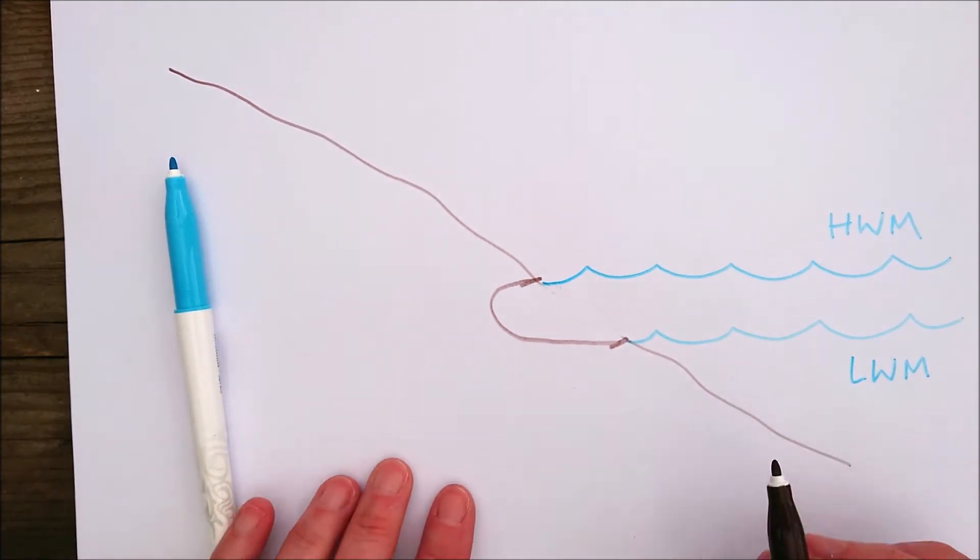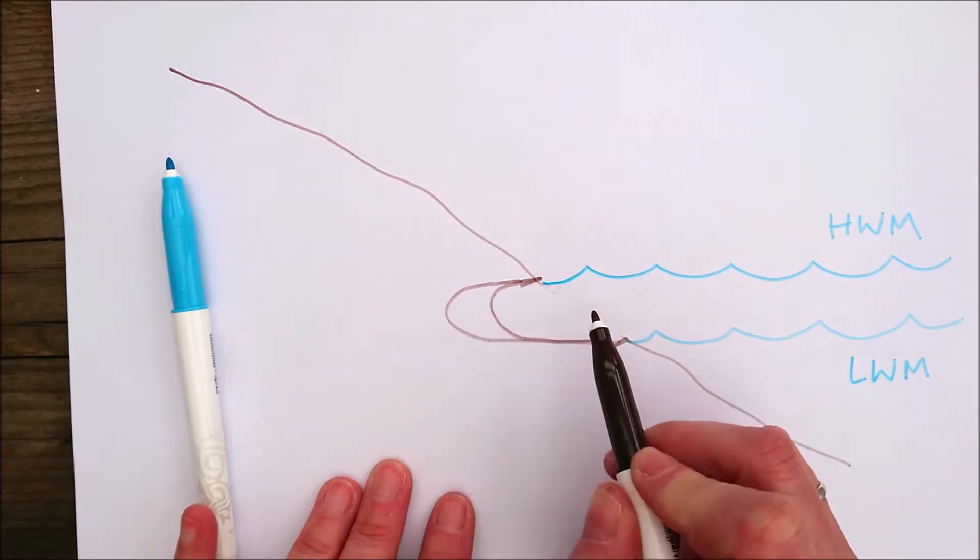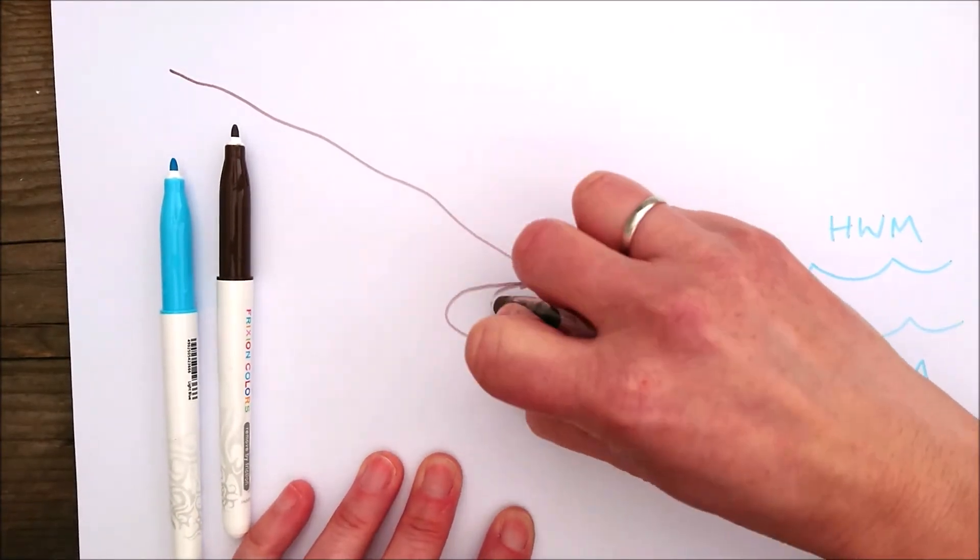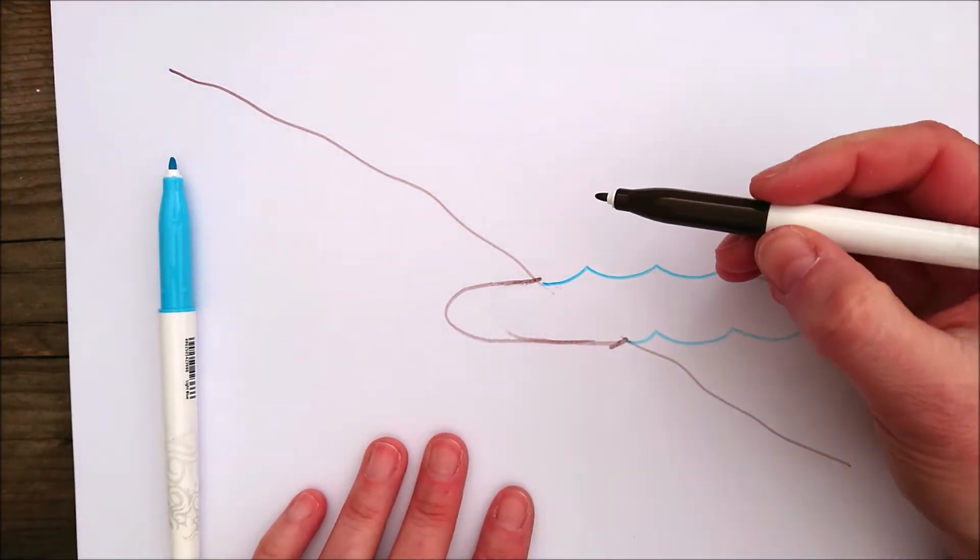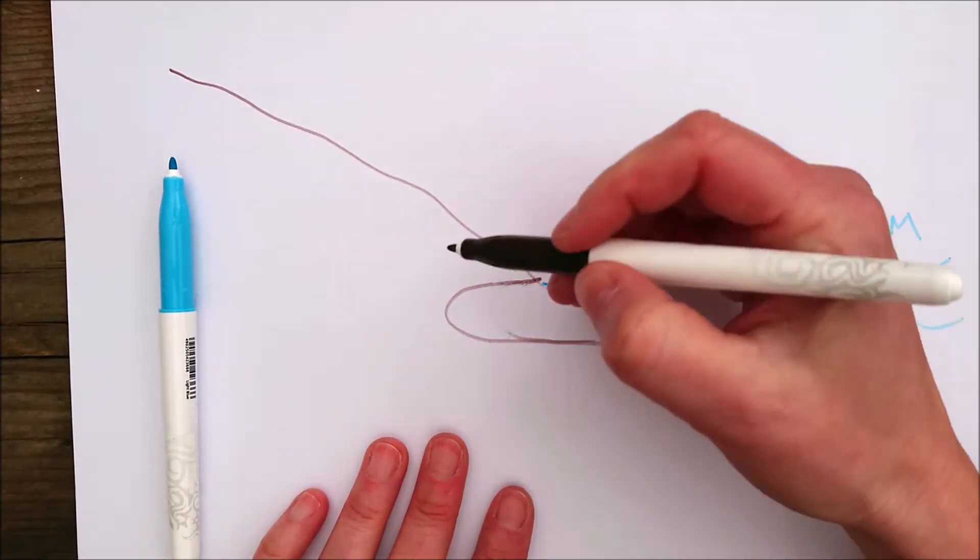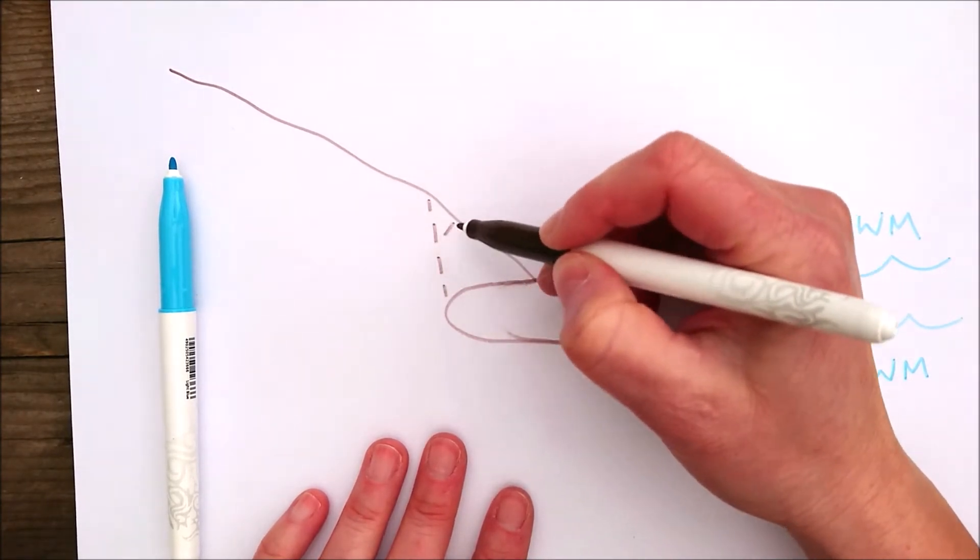Now that process continues eroding further and further backwards. Now this notch here leaves an area of land above it which is unsupported, and that section there therefore becomes quite vulnerable.